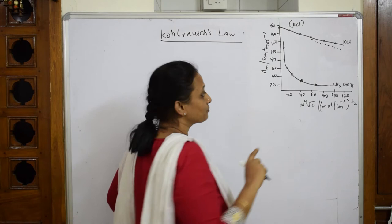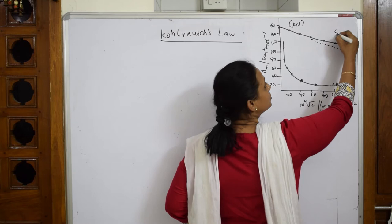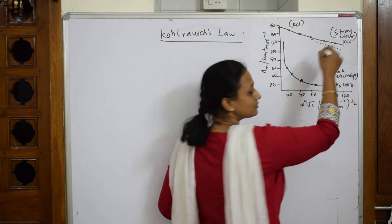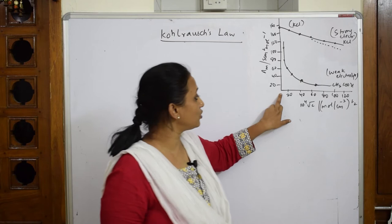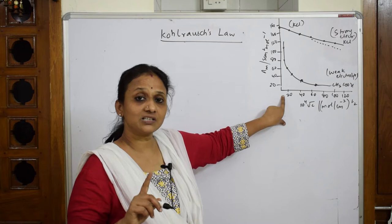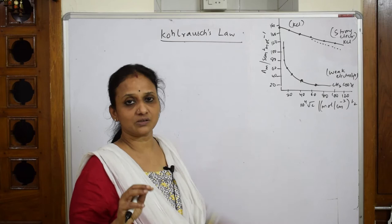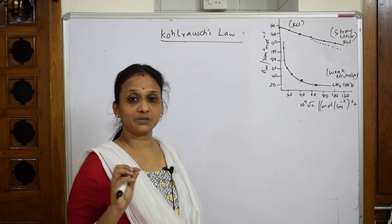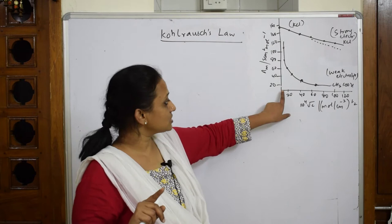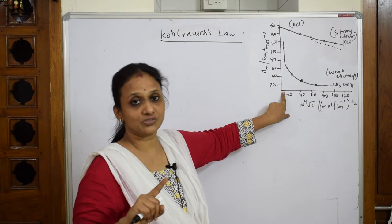You have two different graphs plotted: one for KCl, which is a strong electrolyte, and one for acetic acid, which is a weak electrolyte. Now observe carefully — going from left to right the concentration is maximum on the right and minimum on the left. Concentration minimum means dilution is more. If you add more water, that becomes diluted; if you add less water, the solution is more concentrated.